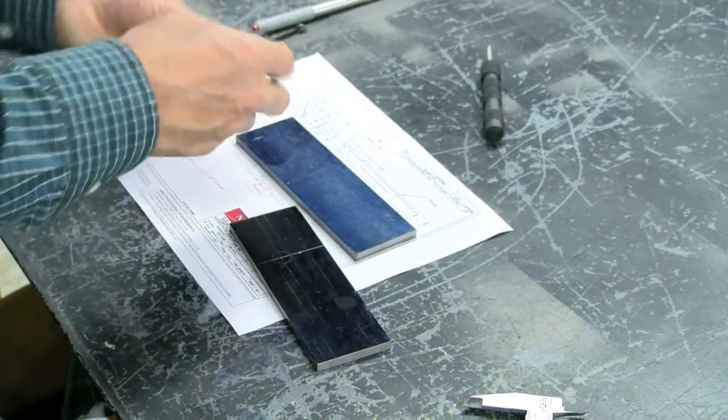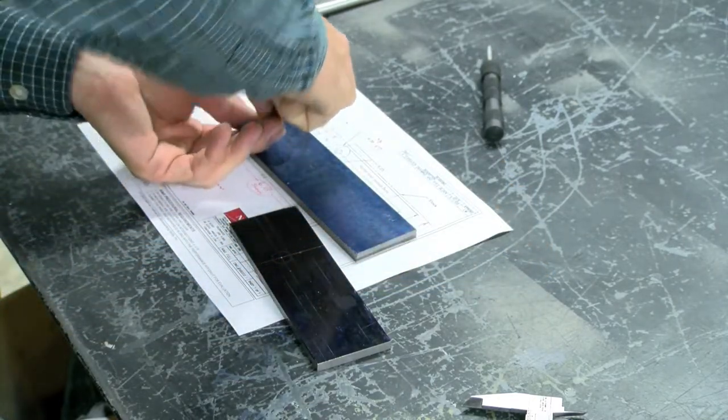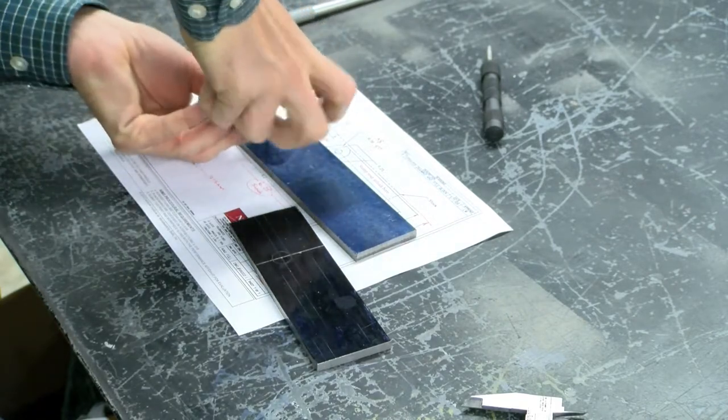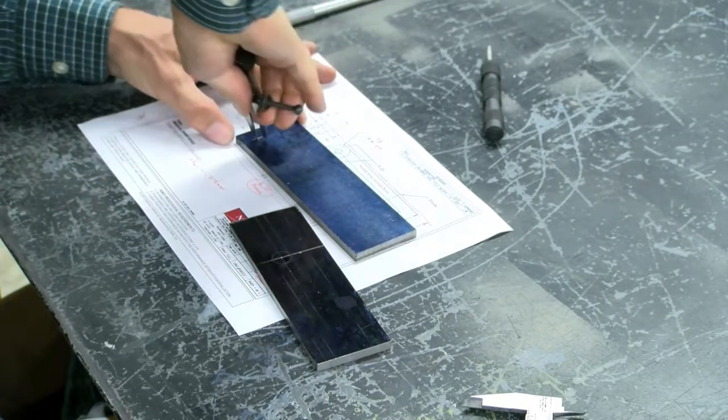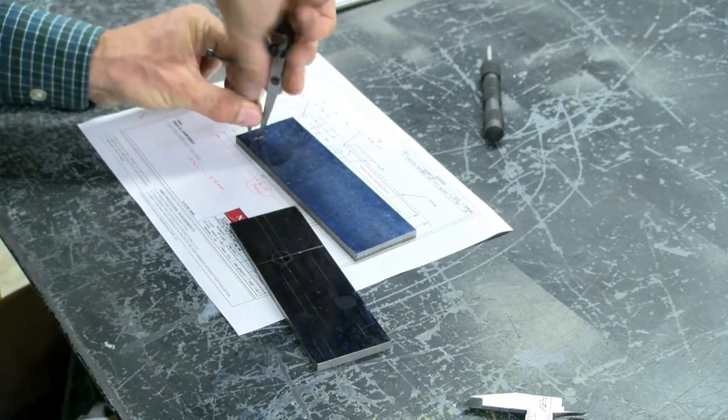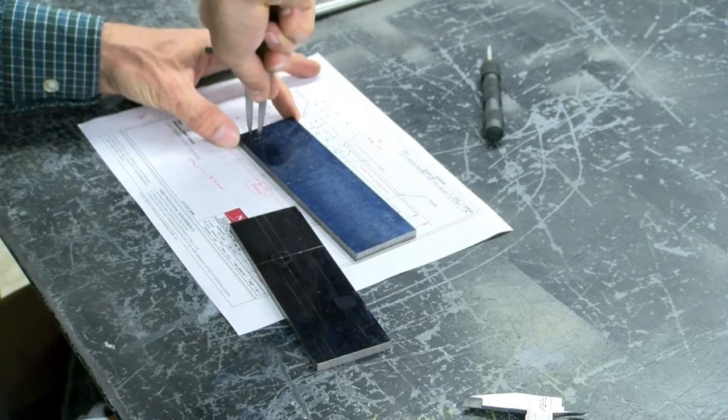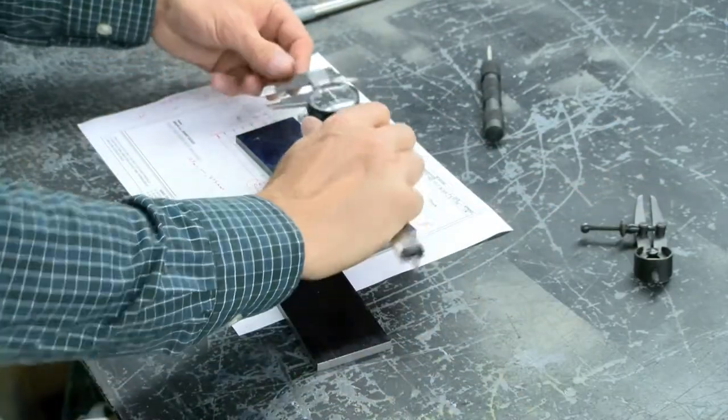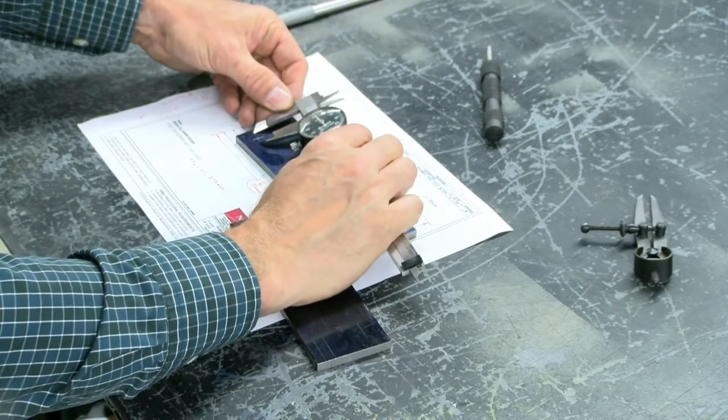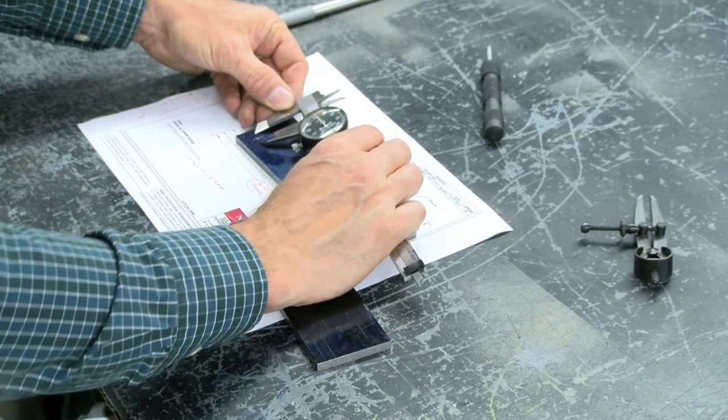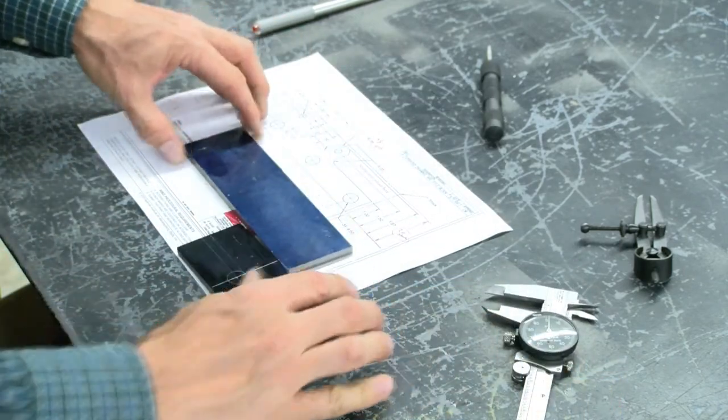I've got my radius and now I'm going to come over here, lock one leg on, and scribe this other one. For kicks and giggles, I'm going to remeasure this to make sure—of course it's too late, it's on there now—but it's beautiful, that's a half inch. That's how you'll scribe your diameters.